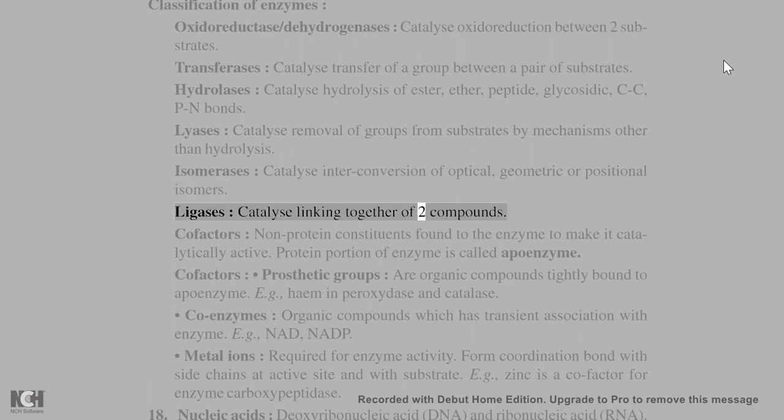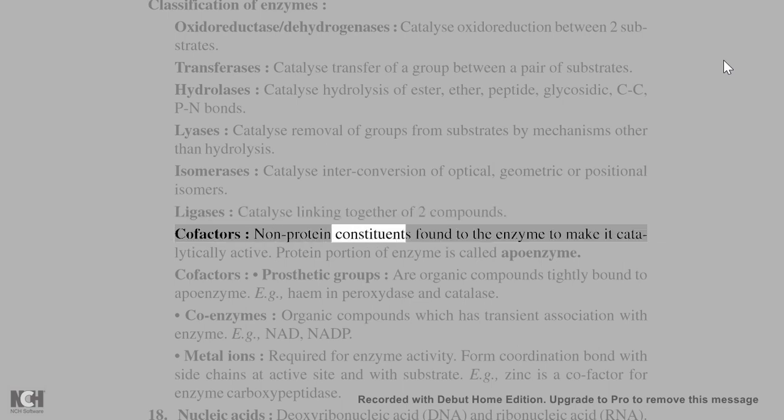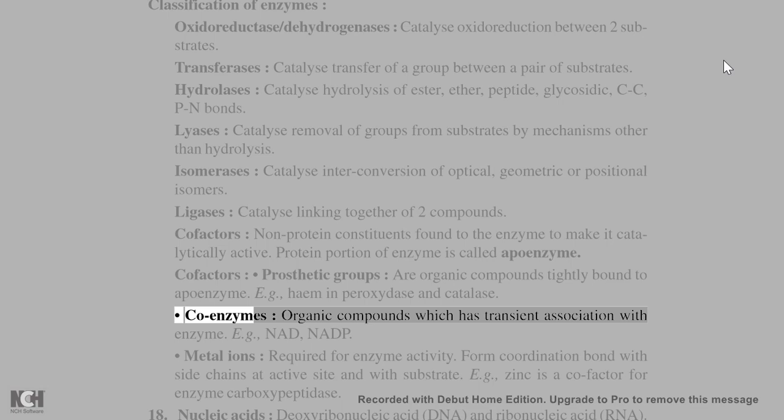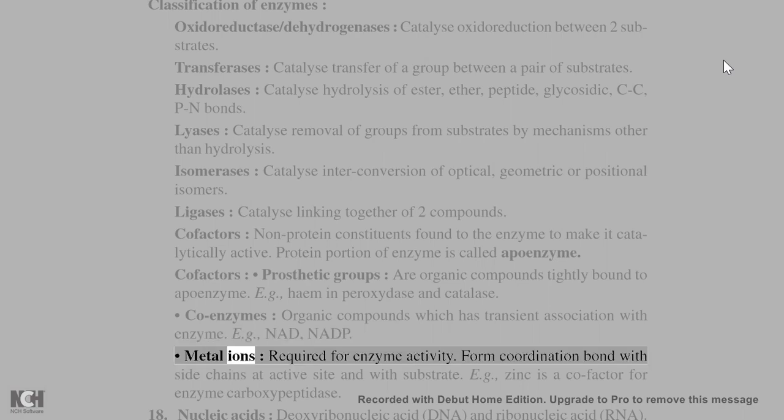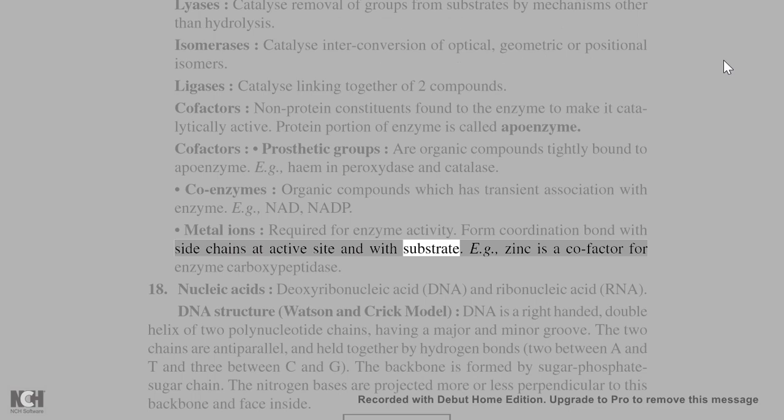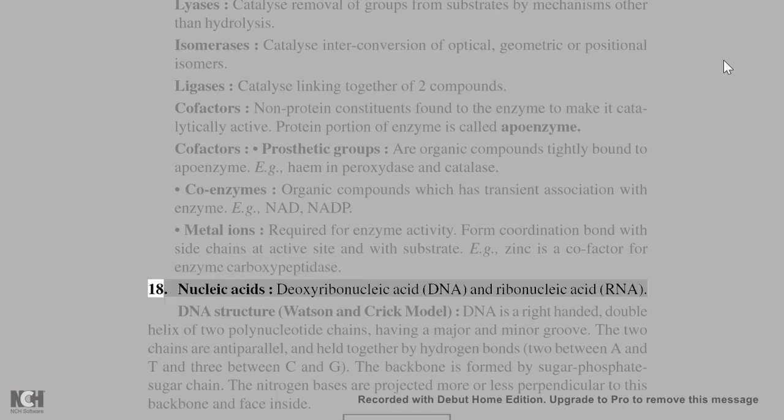Co-factors: non-protein constituents bound to the enzyme to make it catalytically active. Protein portion of enzyme is called apoenzyme. Prosthetic groups are organic compounds tightly bound to apoenzyme, e.g., heme in peroxidase and catalase. Co-enzymes: organic compounds which has transient association with enzyme, e.g., NAD, NADP. Metal ions: required for enzyme activity, form coordination bond with side chains at active site and with substrate, e.g., zinc is a co-factor for enzyme carboxypeptidase.